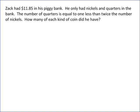In this problem, it's a money problem, and you've got $11.85 in Zach's piggy bank. He's only got nickels and quarters, and it tells you something about the nickels and quarters. It says that the number of quarters is equal to one less than twice the number of nickels.